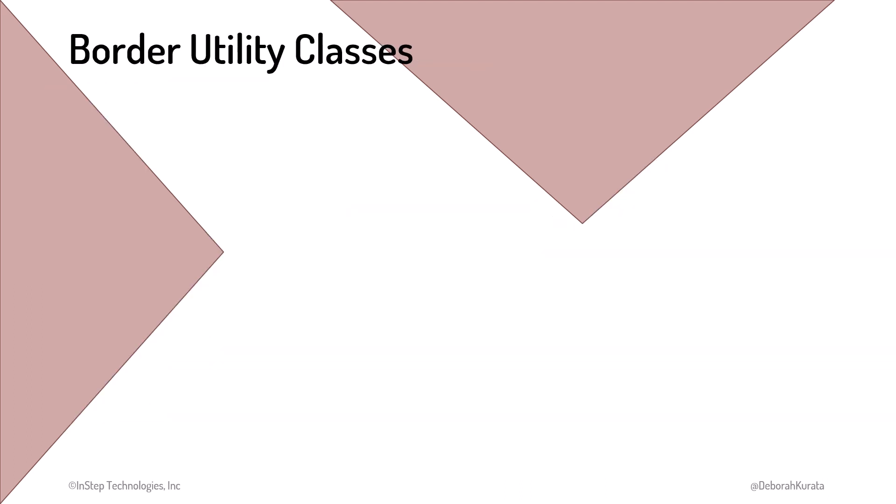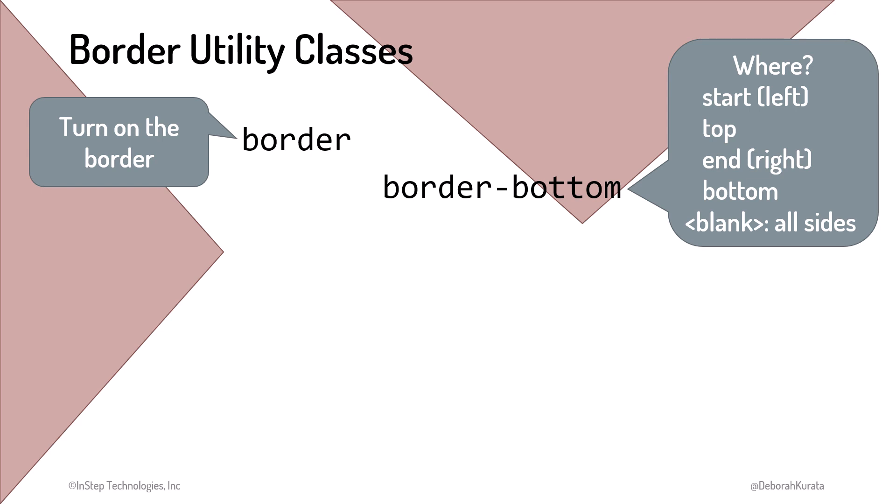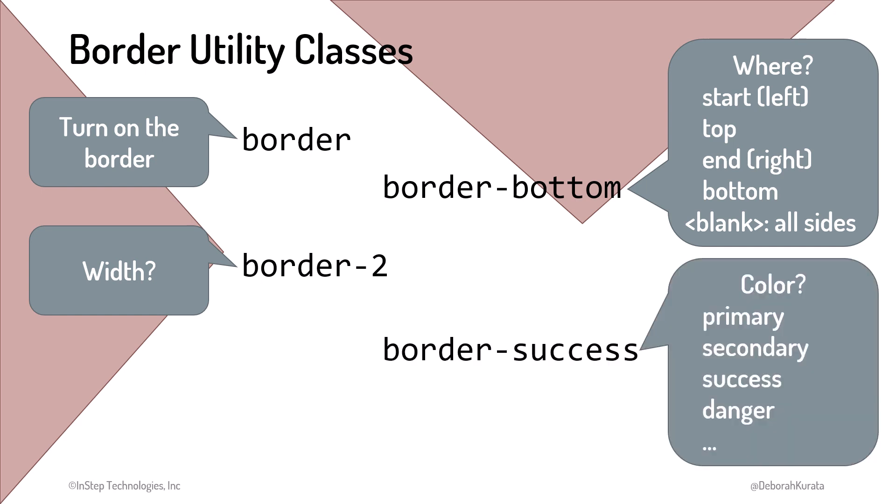Bootstrap provides border classes. The border class turns on the border. Use border and a location to specify where the border is displayed. Specifying the border and a number defines the width of the border in pixels. And use border with a color to set the border color. There is also a set of rounded classes to round the border corners.